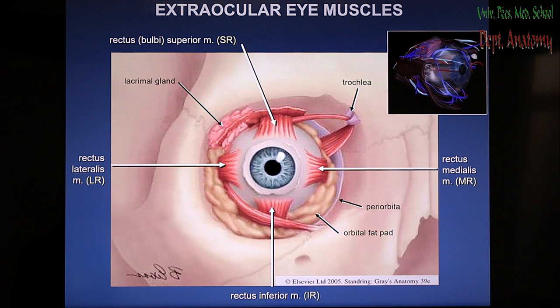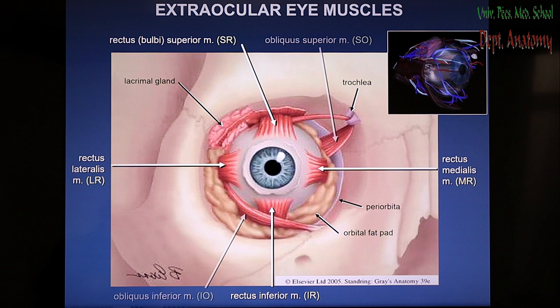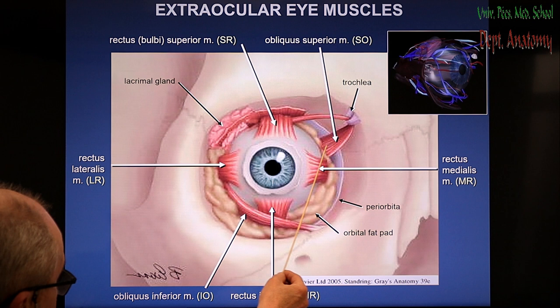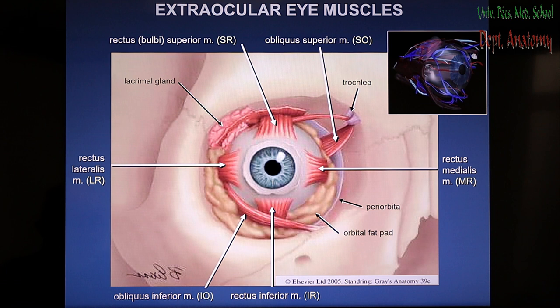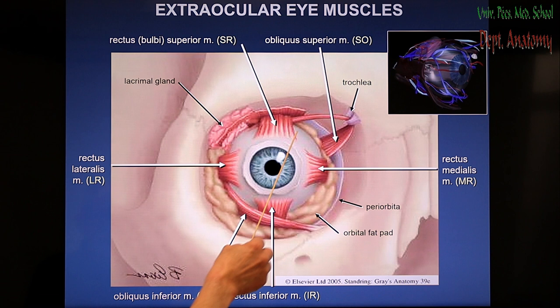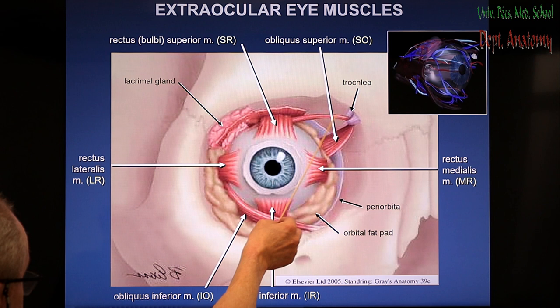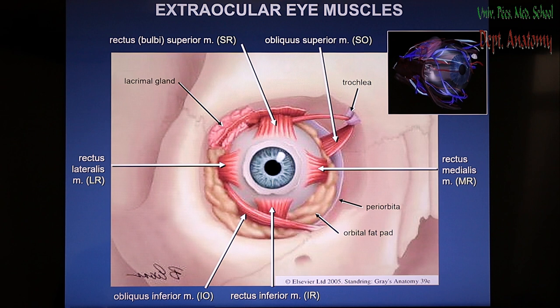Here are the muscles inserting to the sclera of the eye. There are straight muscles and there are oblique muscles. The medial rectus and the lateral rectus are on opposite sides of the eye, with superior and inferior rectus muscles above and below. Additionally, there is the superior oblique, whose tendon turns over the trochlea sitting in the trochlear notch, changing the direction of the pulling movement. Below the eye is the inferior oblique muscle.